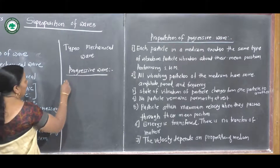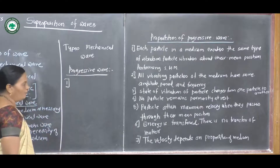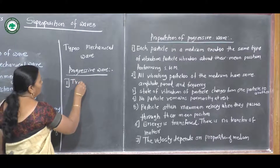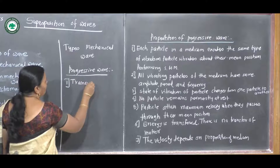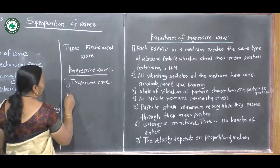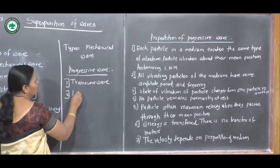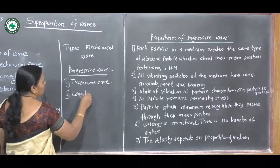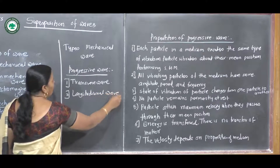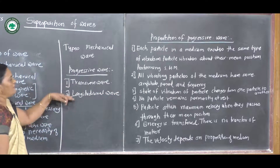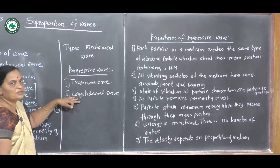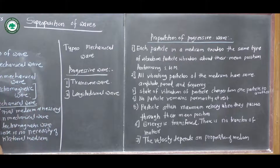The progressive wave has two types: the first type is the transverse wave, and the next type is the longitudinal wave. These two types are the types of progressive mechanical waves.